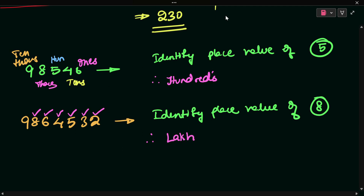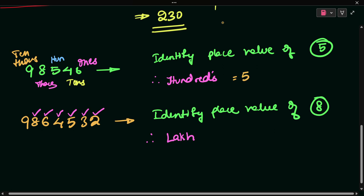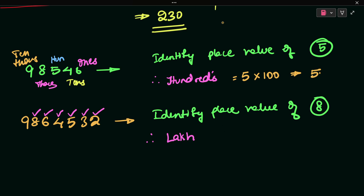So for place value: 5 is in the hundreds place, so 5 into 100 equals 500 — that is the answer. And 8 is in the lakhs place, so 8 into one lakh equals eight lakh. That is how we calculate place value. The first three digits, then two digits — so it is one lakh, and eight into one lakh is eight lakh.